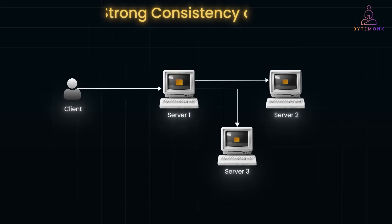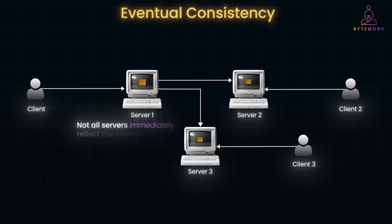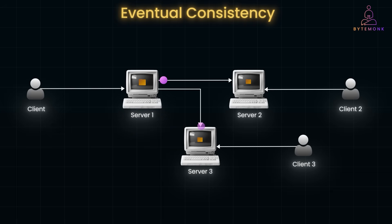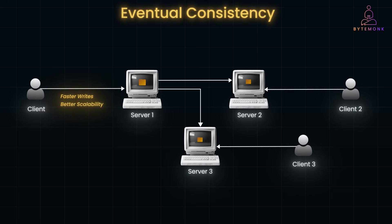In the eventual consistency model, when you update a file, not all servers immediately reflect the change. Instead, updates are propagated gradually, meaning that for a short period some users might see the old version while others see the updated one. A great example is cloud storage: if you upload a new version of a document to an S3-like storage, you might briefly see the older version from another region before the update fully propagates. After a few seconds or minutes, all users will eventually see the latest data. This model allows faster writes and better scalability since storage nodes can process requests independently.